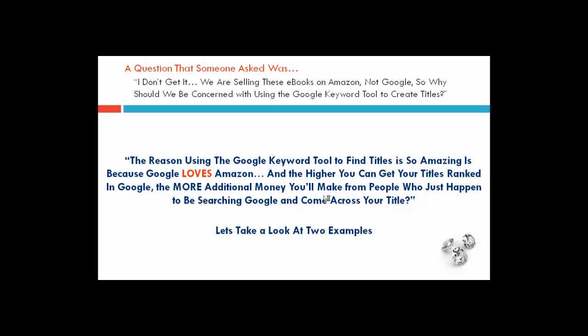One question you might be asking is: if we're using Amazon, why are we not looking in Amazon for our research? Why are we searching in Google? You can use Amazon's bestsellers list to get topics, but we use the Google Keyword Tool because Google loves Amazon. The higher you can get your titles ranked in Google — ranking means being that first result when someone types something in — the more money you're going to make, hands down. This is how you really make a lot of money off one book.